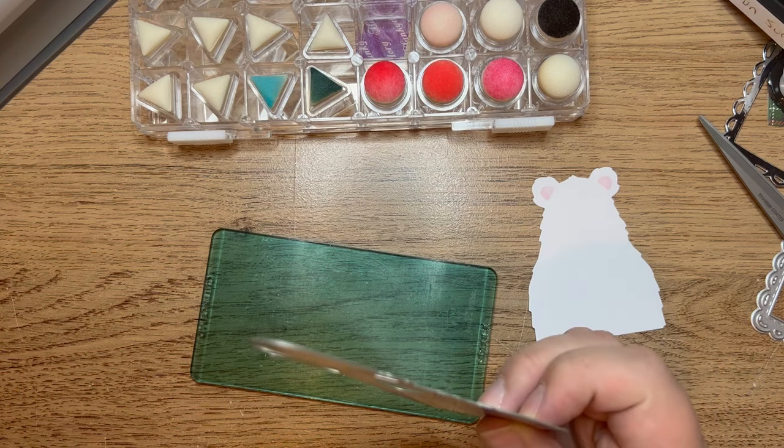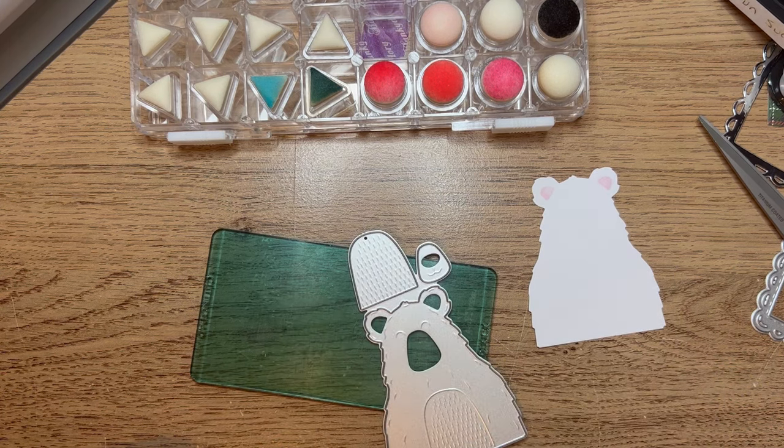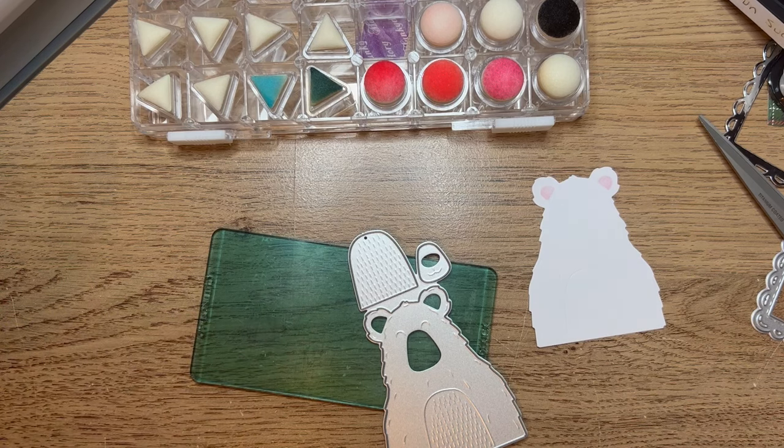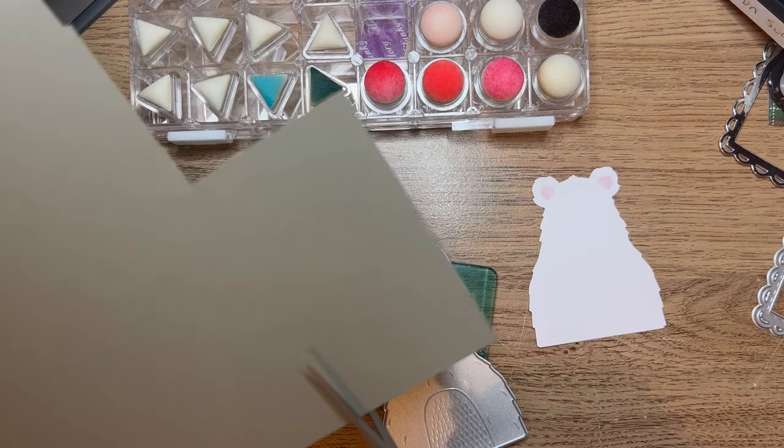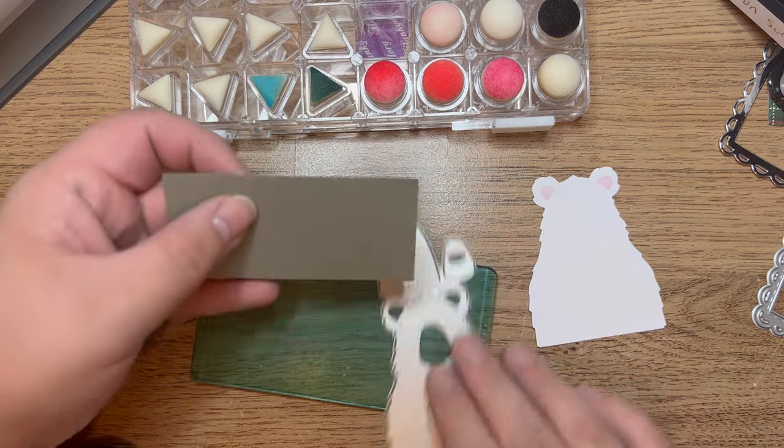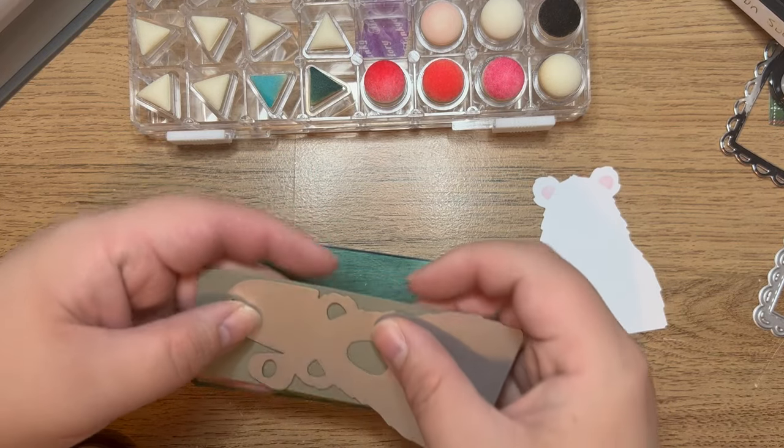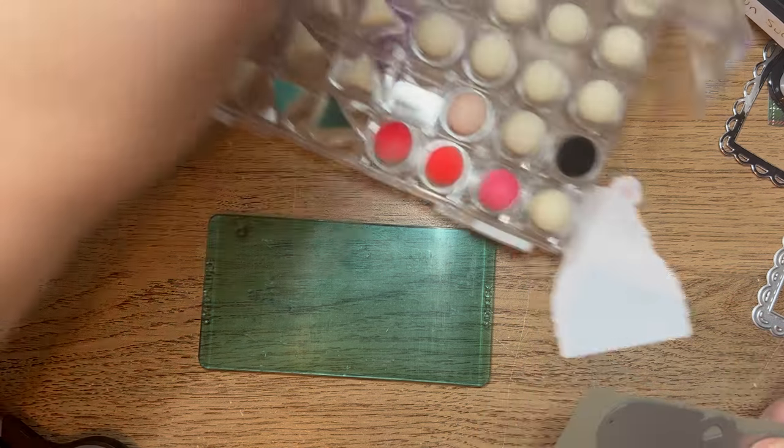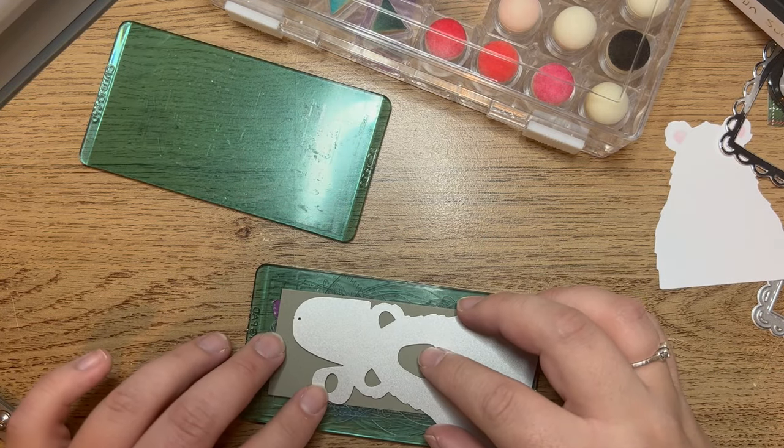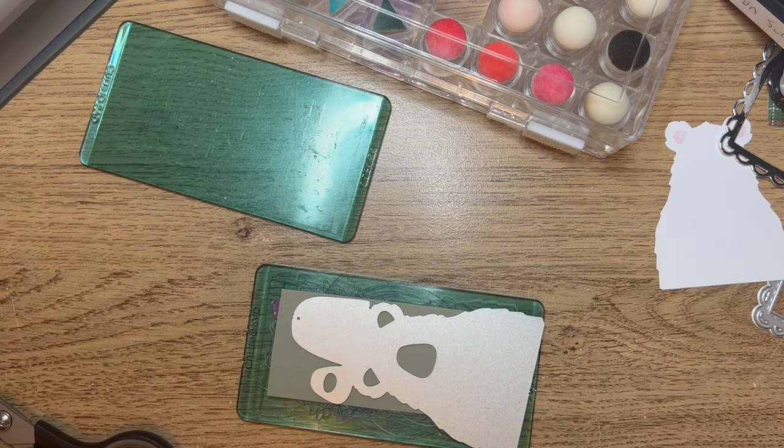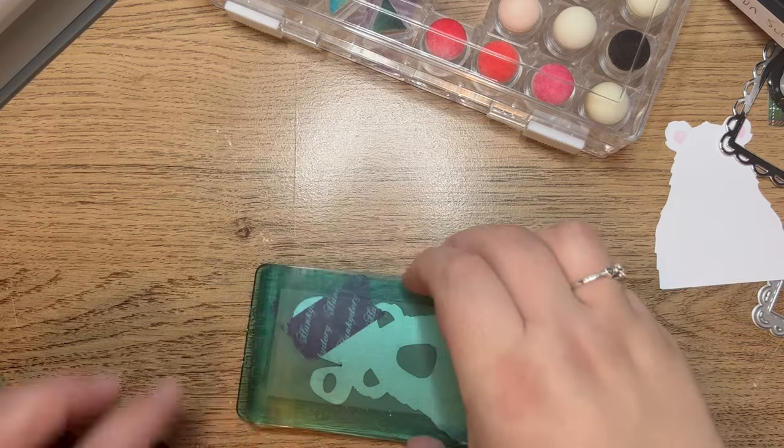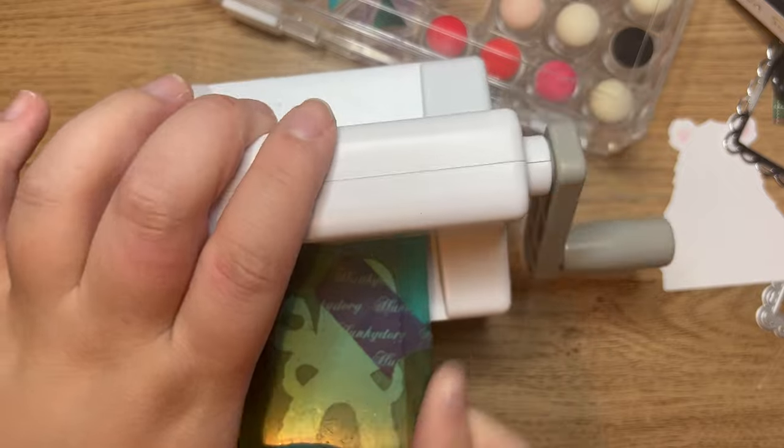Now I'm going to take my darker grey color because I want to make his muzzle and belly. I just need a little patch of this. I'm going to line that up and use my low tack tape to make sure it's stuck down in place. I'm going to pass that through my sidekick.